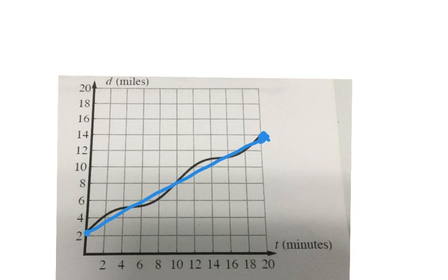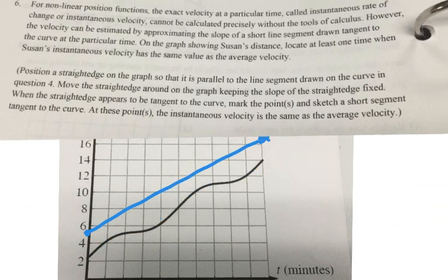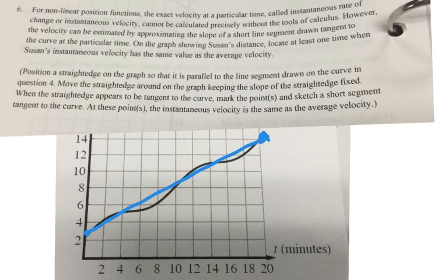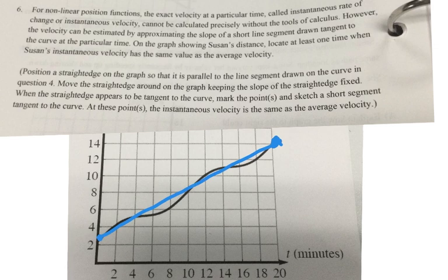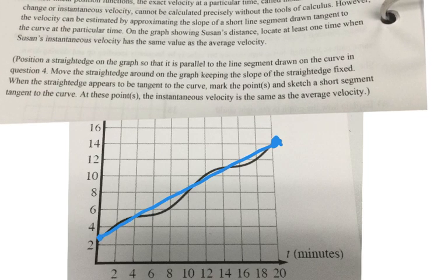Looking at problem six, it says for a nonlinear position function, which is what we have here, this is not in a line. So it's a nonlinear position function. The exact velocity at a particular time called the instantaneous rate of change or instantaneous velocity cannot be calculated precisely without calculus. However, the velocity can be estimated by approximating the slope of a short line segment drawn tangent to the curve at a particular time. On the graph showing Susan's distance, locate at least one time when Susan's instantaneous velocity has the same value as the average velocity.